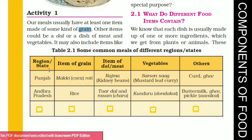This is what we discussed. The region is Punjab. The item of grain they use is makki roti, that is corn roti. The item of dal or meat is rajma, which is kidney beans. Then vegetables include sarso da saag, which is mustard leaf curry. Other items could be curd, ghee, and butter.